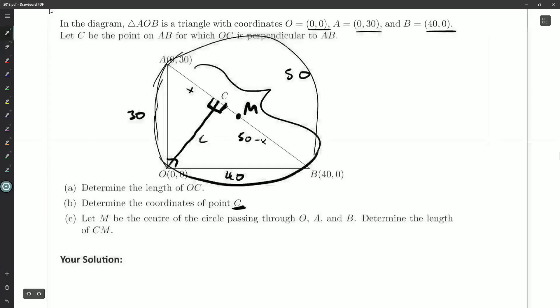So M has coordinates. How do we find midpoint coordinates? You add up the x coordinates and divide by 2, and you add up the y coordinates and divide by 2. So it'll be 20, 15. 20, 15—that makes sense, it's halfway up there and halfway over there. Good. All right, and so what's the difference? What's the length CM?